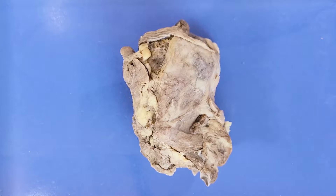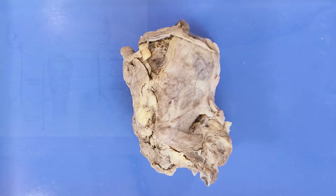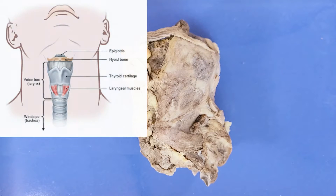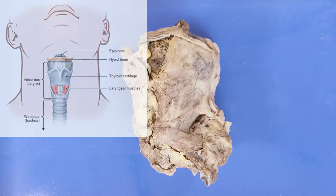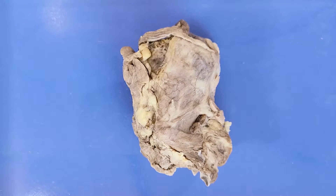Hello and welcome to O-Wyrm. Today we'll be taking a look at the anatomy of the larynx. This is a sheep larynx, which is pretty similar to a human larynx. The larynx is a segment of the respiratory tract that connects the pharynx, which is above it, to the trachea, which is below. It is located in the top of the neck and is involved in functions such as breathing, producing sound, and protecting the trachea while swallowing. The larynx also houses the vocal cords, which is why it is sometimes called the voice box.